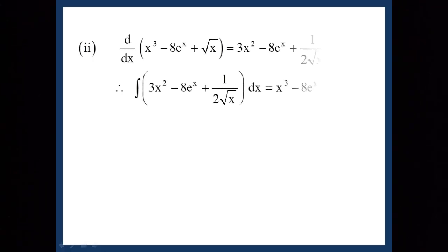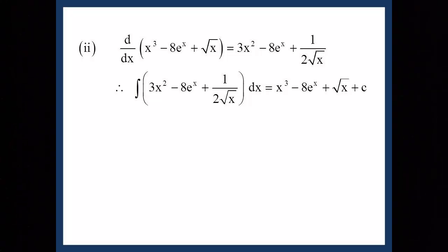Let me give you one more example. What is the derivative of x³ − 8eˣ + √x? The derivative of x³ is 3x², the derivative of eˣ is eˣ, and the derivative of √x is 1/(2√x). Therefore d/dx of (x³ − 8eˣ + √x) = 3x² − 8eˣ + 1/(2√x). Hence ∫(3x² − 8eˣ + 1/(2√x)) dx = x³ − 8eˣ + √x + c. You may ask why not use separate constants c₁, c₂, c₃ — you can, but since c is an arbitrary constant, c₁ + c₂ + c₃ is just another constant c.